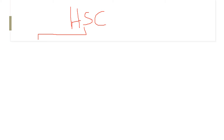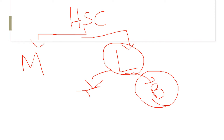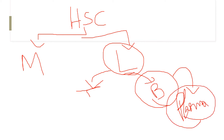These hematopoietic stem cells produce the myeloid and the lymphoid progenitor cells. The lymphoid progenitor cells in turn give rise to the T and the B lymphocytes. The B lymphocytes, when they get in contact with a foreign body, the antigen of that foreign body activates the B lymphocyte, and then they produce the plasma cells. These plasma cells produce immunoglobulins, which are the antibodies that help fight off the invading foreign body or antigen.